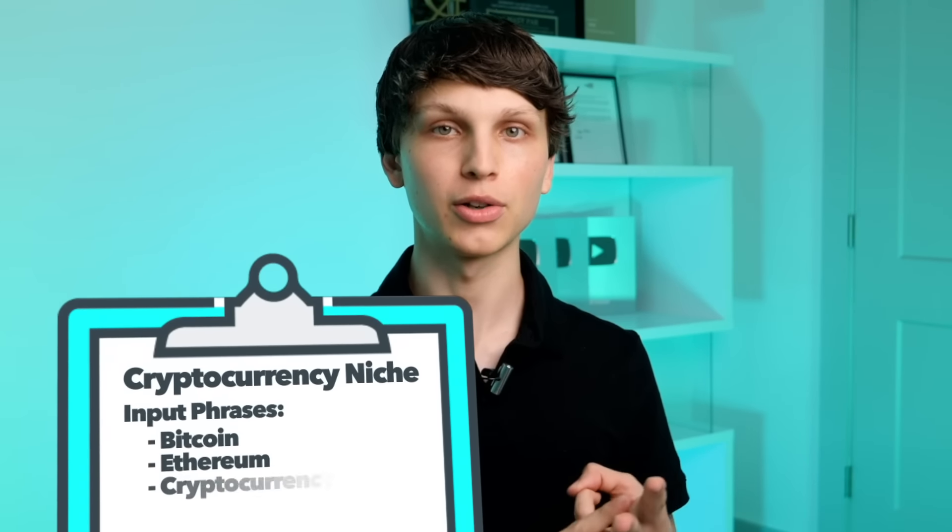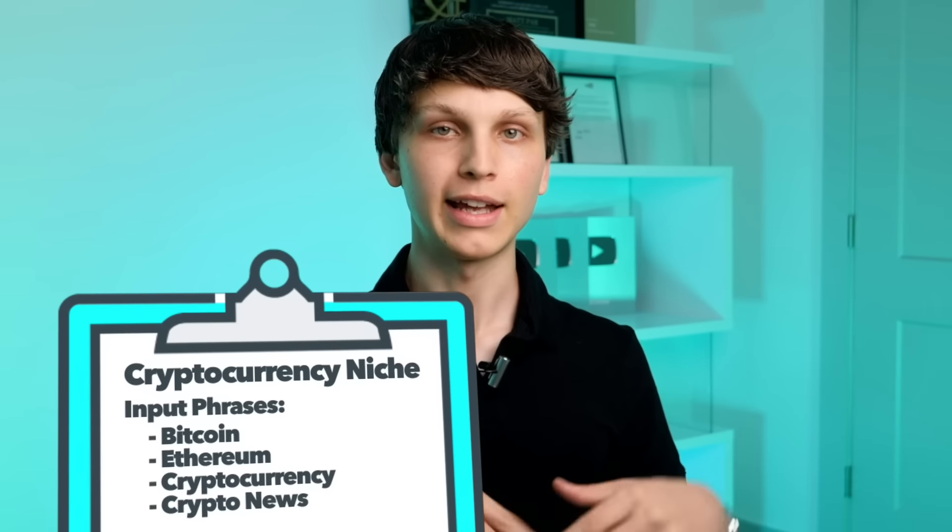In order to find the right video ideas from YouTube search, what I recommend doing is making a list of input phrases that are related to your niche. So let's say your niche is cryptocurrency videos. What I would personally do is make a list of different cryptocurrency terms that relate to your channel — for example, Bitcoin, Ethereum, cryptocurrency, crypto news, and everything related to cryptocurrency. And then I would start plugging these terms directly into YouTube search.